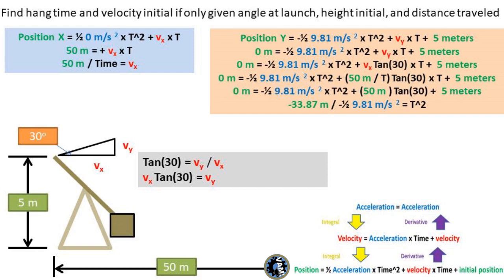After that, we can divide by the acceleration due to gravity portion of the equation to get the time by itself on one side of the equation. Now, we must find the square root to find the hang time. We get a hang time of 2.63 seconds.